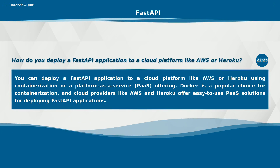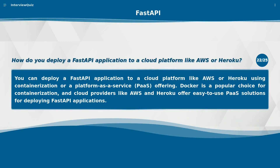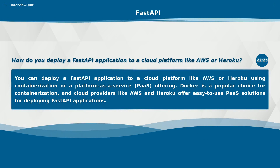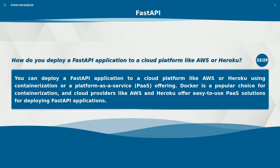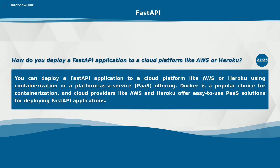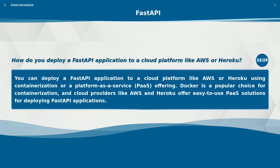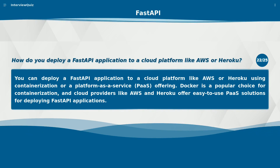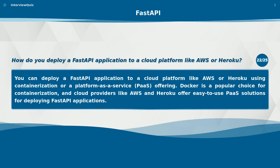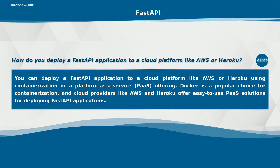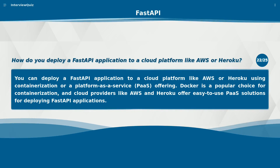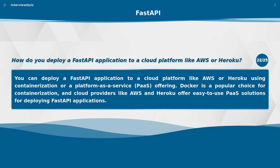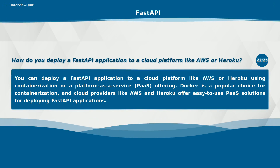How do you deploy a FastAPI application to a cloud platform like AWS or Heroku? You can deploy FastAPI using containerization or a platform-as-a-service (PaaS) offering. Docker is a popular choice for containerization, and cloud providers like AWS and Heroku offer easy-to-use PaaS solutions for deploying FastAPI applications.